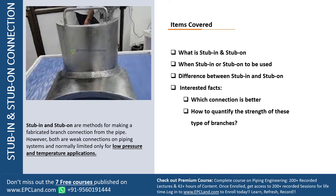As we all know, stub-in and stub-on are both methods of making a fabricated branch connection from a pipe. We use these in many scenarios when we are planning a tapping from the headers. At the same time, we consider these as weak connections, so we only prefer such connections for low pressure and temperature applications.